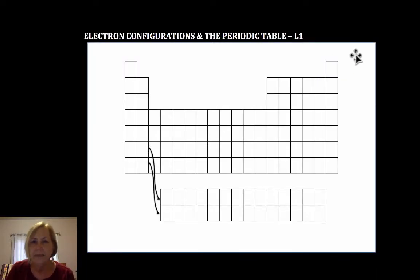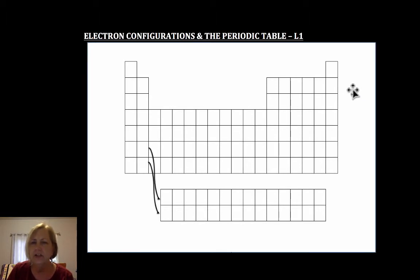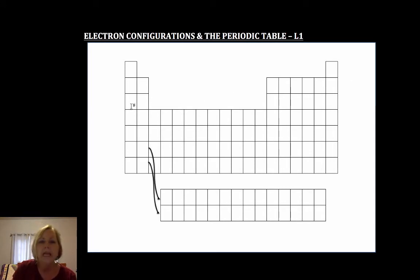In this video I want to show you just how easy it is to get so much information from the periodic table. When I did electron configurations I learned the diagonal rule — you'll see it in a lot of books — but it wasn't until I was teaching that I really saw doing electron configurations from a periodic table, and it's so much more logical.